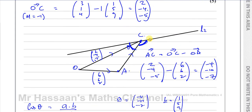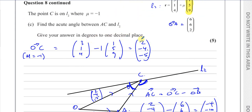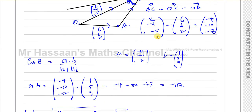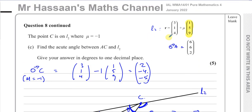That's the answer we're looking for — 28.3 degrees to one decimal place. That concludes question number 8 from the P4 paper from January 2022. Other questions from this paper and from vectors in P4 can be found via the links shown. Thank you for watching and see you soon.